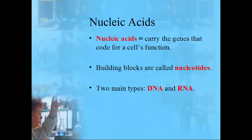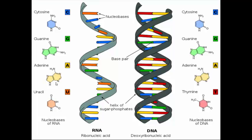The last of the four organic compounds are nucleic acids, which carry genes and code for a cell's function. DNA is a type of nucleic acid — it's your blueprint. There are only two types of nucleic acids: DNA (deoxyribonucleic acid) and RNA (ribonucleic acid). Their building blocks are called nucleotides. DNA has that spiral staircase, or double helix, shape; RNA has only one strand.